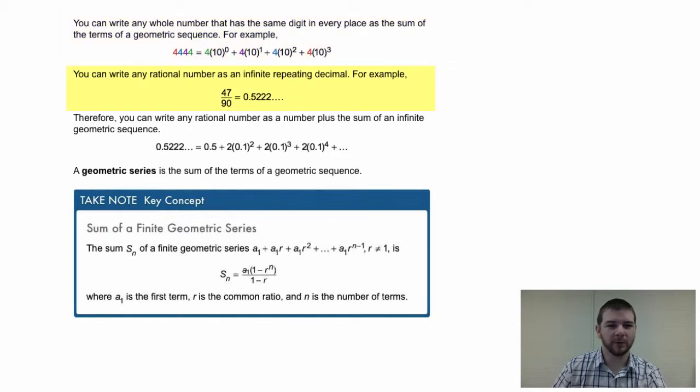You can write any rational number as an infinite repeating decimal. For example, 47 over 90 equals 0.5222, etc. Therefore, you can write any rational number as a number plus the sum of an infinite geometric sequence. This really combines the previous two concepts on this page.